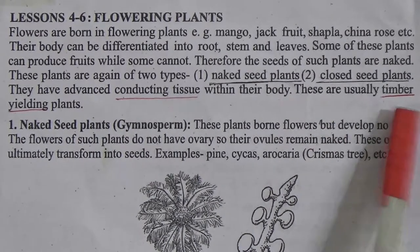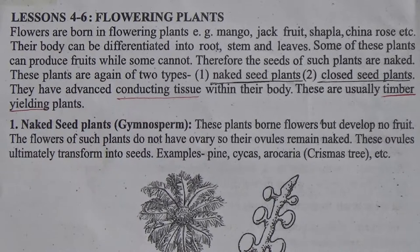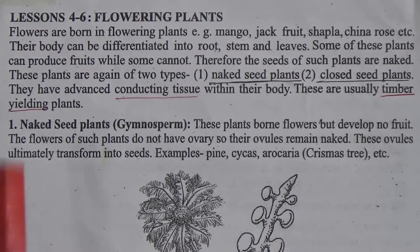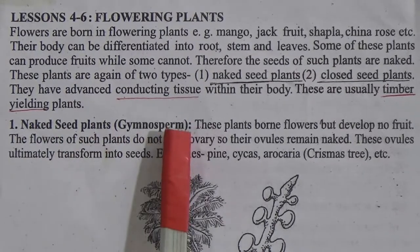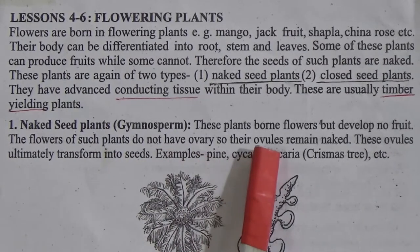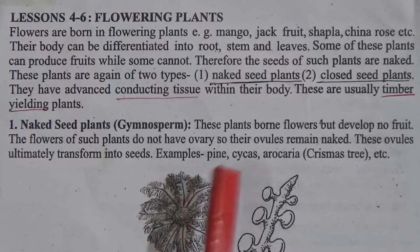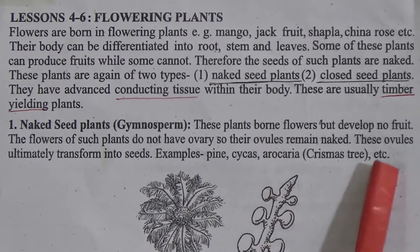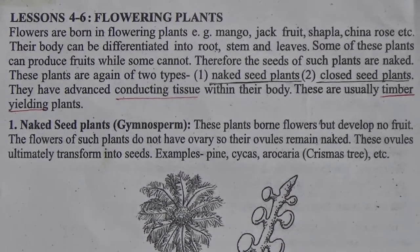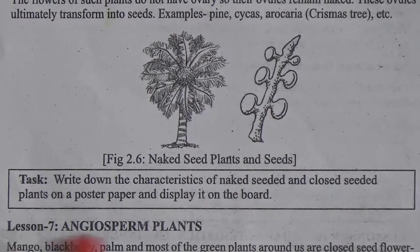These are usually timber-yielding plants. Timber-yielding means the plants which are used for wood, like mango tree, jackfruit tree or blackberry tree. Next seed plants bear flowers but develop no fruits. The flowers of such plants do not have an ovary, so their ovules remain naked. These ovules ultimately transform into seeds. Examples include pine, cypress, araucaria, etc. You can see here a gymnosperm — this is a next seed plant and these are its seeds.